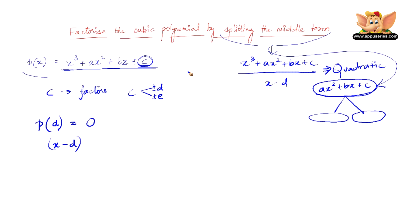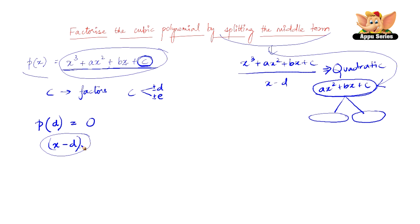In a nutshell, what you have to do is first find the factors of the constant term present in the cubic expression. See which one of those factors satisfies the expression and based on that, find the factor. Once you find the factor of this expression, divide this by the factor and then you will get a quadratic equation. This quadratic equation can be factorized by splitting the middle term, during which we get all three factors.